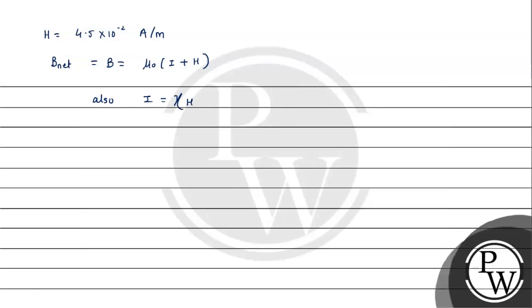So B = μ₀(I + H), where I is the magnetization. Also, we know that I is proportional to H, so I = χH, where χ is magnetic susceptibility. We can evaluate as B = μ₀(1 + χ)H. This term (1 + χ) is μᵣ, the relative permeability of the medium. Finally, we can say B = μᵣ × μ₀ × H.